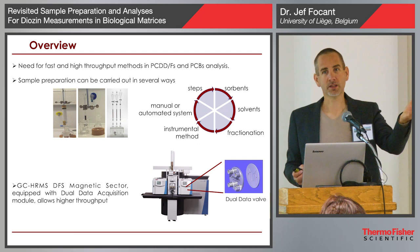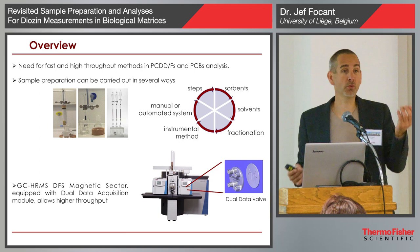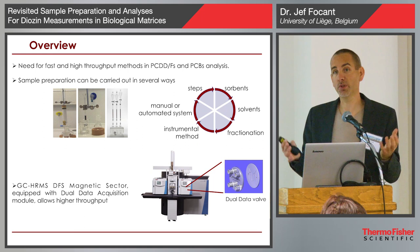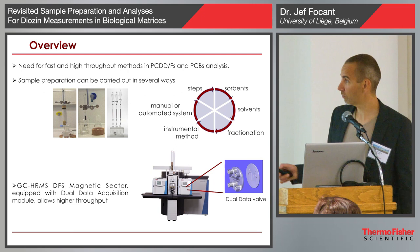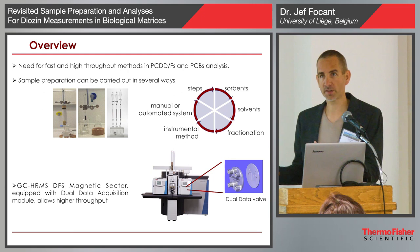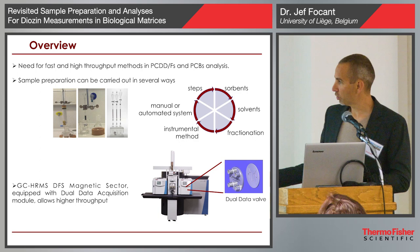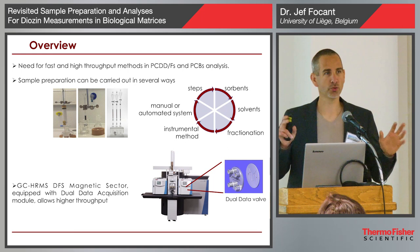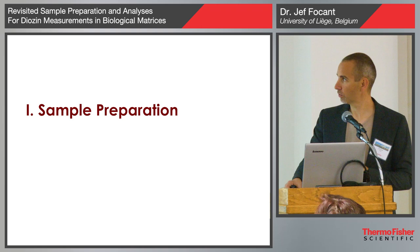If you have to analyze a hundred gram piece of meat, you will need some solvent at some point. Because of the low levels, we have to use solvent. Fractionation gives you different fractions for analysis. Then of course you need to develop your method. We are mainly talking about the sector instrument, which remains the gold standard. I'm going to touch on dual data acquisition to introduce it so that the next speakers can develop that — it's something very interesting to use.